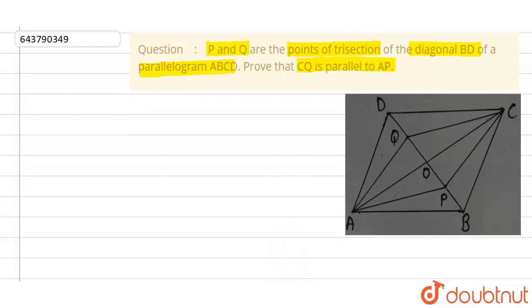So, let's start the solution. Now, first, we know that the diagonals of a parallelogram bisect each other. So we can say that OA is equals to OC and OB is equals to OD.